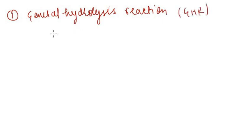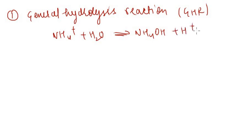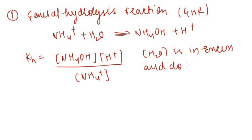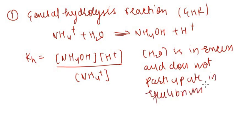The general hydrolysis reaction is: NH4⁺ + H2O → NH4OH + H⁺. This is the reaction taking place when the cation is being hydrolyzed. The hydrolysis constant is called KH. KH equals [NH4OH][H⁺] / [NH4⁺]. H2O is not included because it is in excess and does not participate in the equilibrium, so we absorb it into the hydrolysis constant KH.